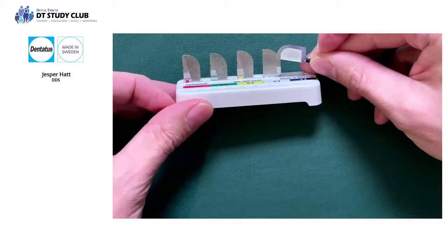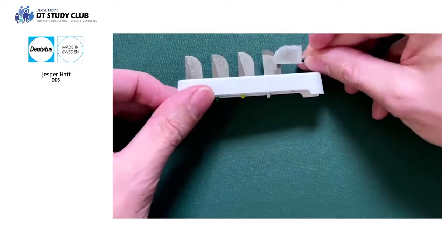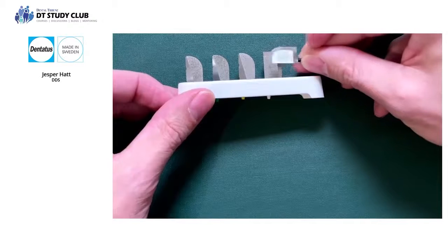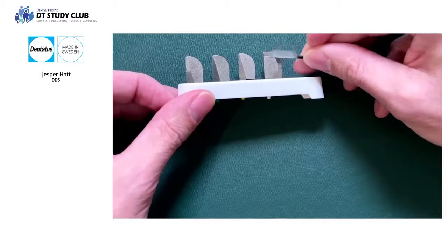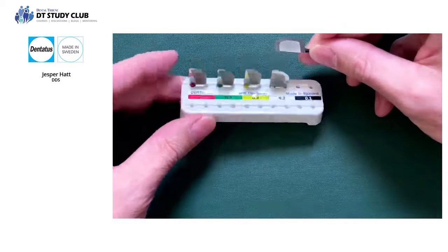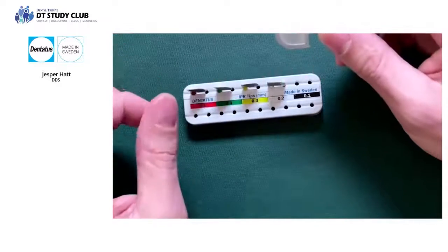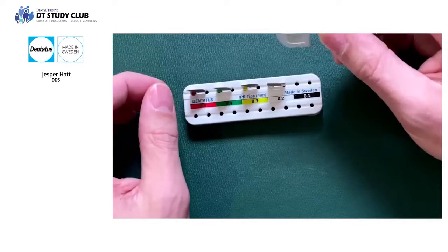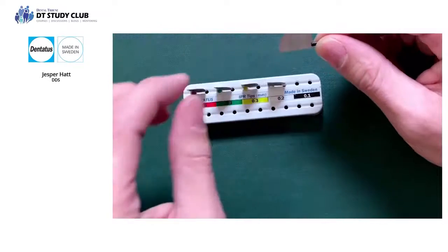The diamonds covering this tip differ a little bit from the others, and that's because this 0.1 millimeter tip has a 15 micron diamond coating which enables it to be used for polishing the teeth.